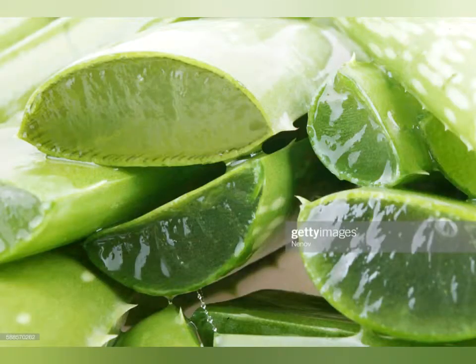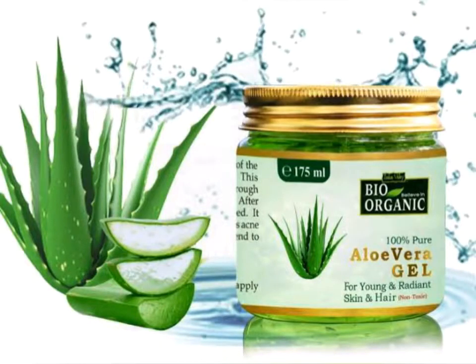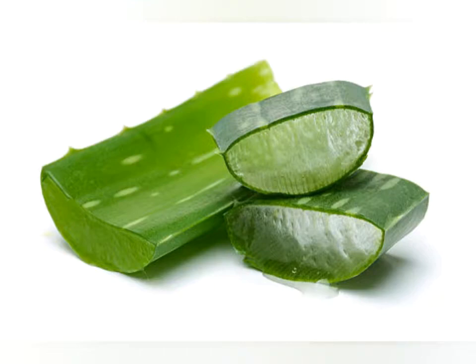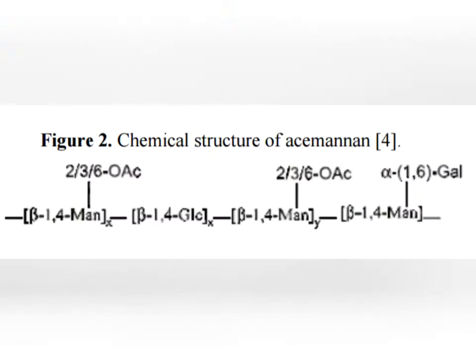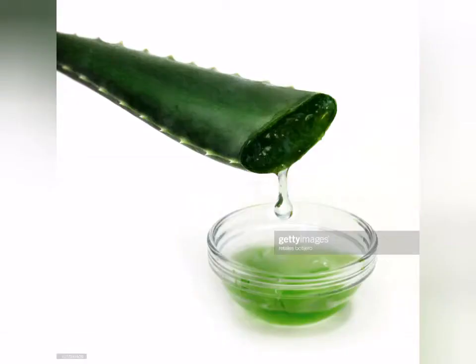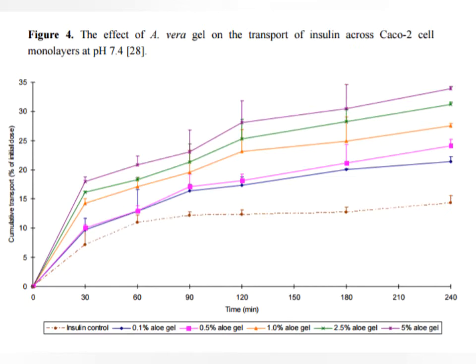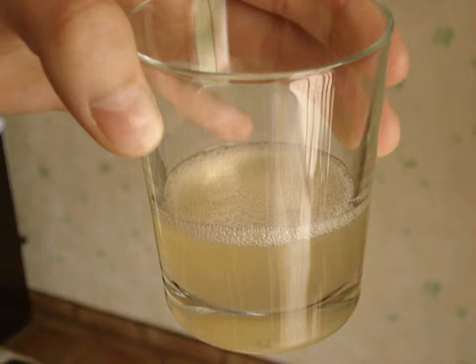The gel is a mucilage obtained from the flesh of the leaf and contains quite different compounds from the bitter latex. Aloe gel is 99% water with a pH of 4.5. It contains the emollient polysaccharide glucomannan, a good moisturizer used in many cosmetics. Acemannan, another major carbohydrate in the gel, is a water-soluble long-chain mannose polymer that accelerates wound healing and modulates immune function. The gel also contains bradykinase, anti-inflammatory magnesium lactate which helps prevent itching, and salicylic acid and other anti-prostaglandin compounds which relieve inflammation.